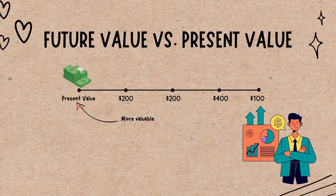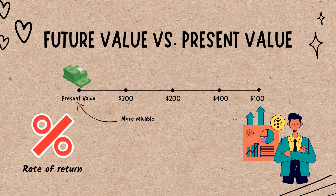Present value takes the future value and applies a discount rate, or the interest rate that could be earned if invested. Future value tells you what an investment is worth in the future, while present value tells you how much you'd need in today's dollars to earn a specific amount in the future.